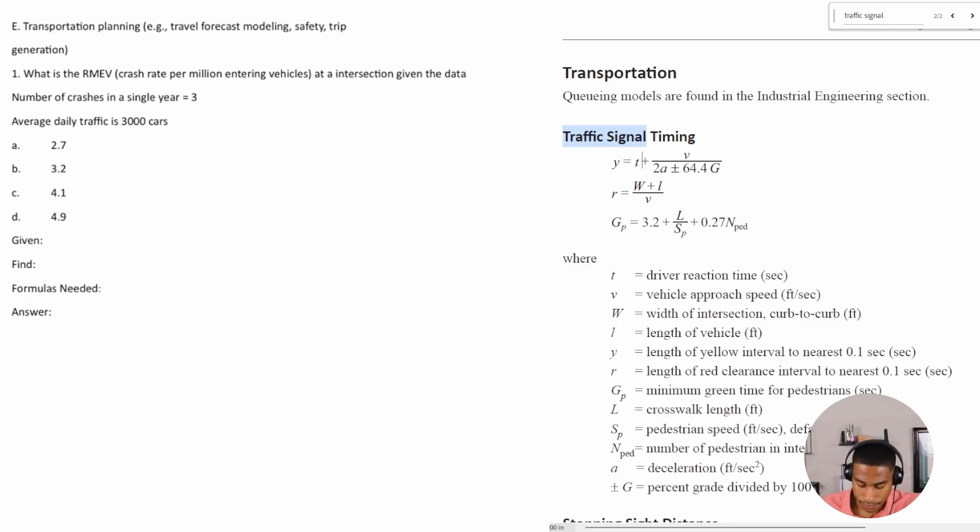Okay, so I always start by seeing what is given. The number of crashes in a single year, I'll highlight this stuff in green, this is good information for us, and the average daily traffic. Those are the two things that are given, all right.